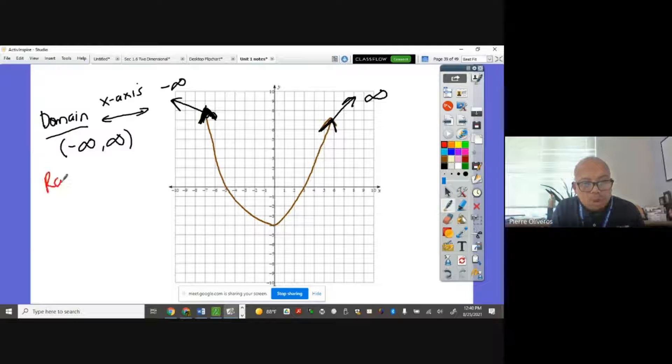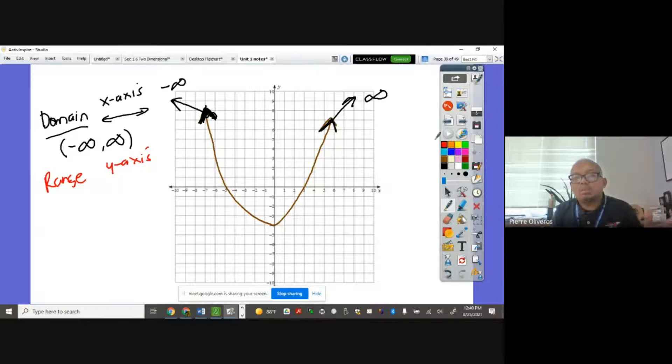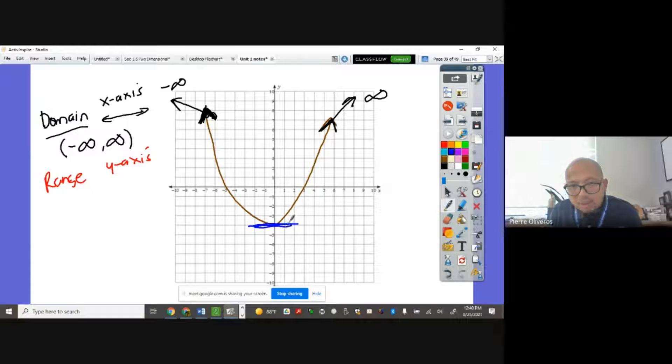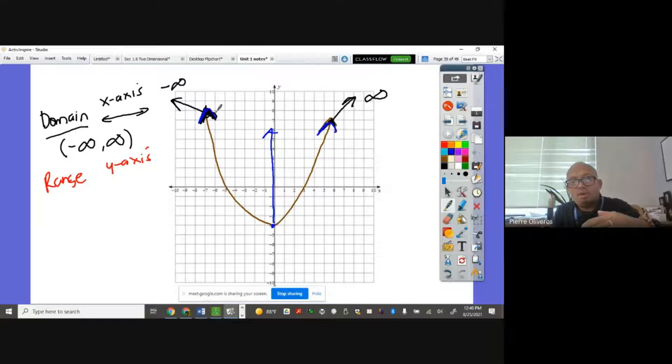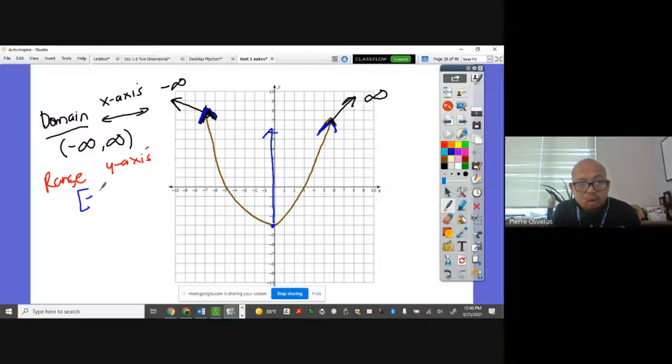With a range, it's the y-axis. We look at the y value from the bottom to top. What's the lowest point of our parabola? The lowest point of our parabola is right here, which is negative 4. Negative 4 up to, there's a graph going up there. Remember, this arrowhead means going up. So from negative 4 going up. So the range there is from negative 4, including negative 4, to the infinity, okay?